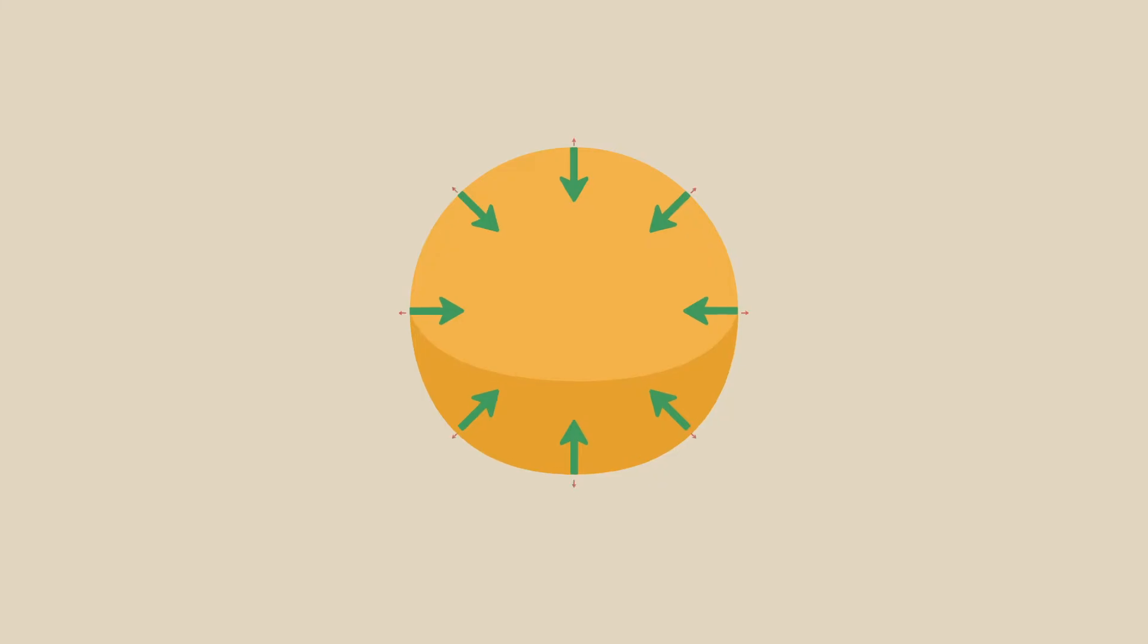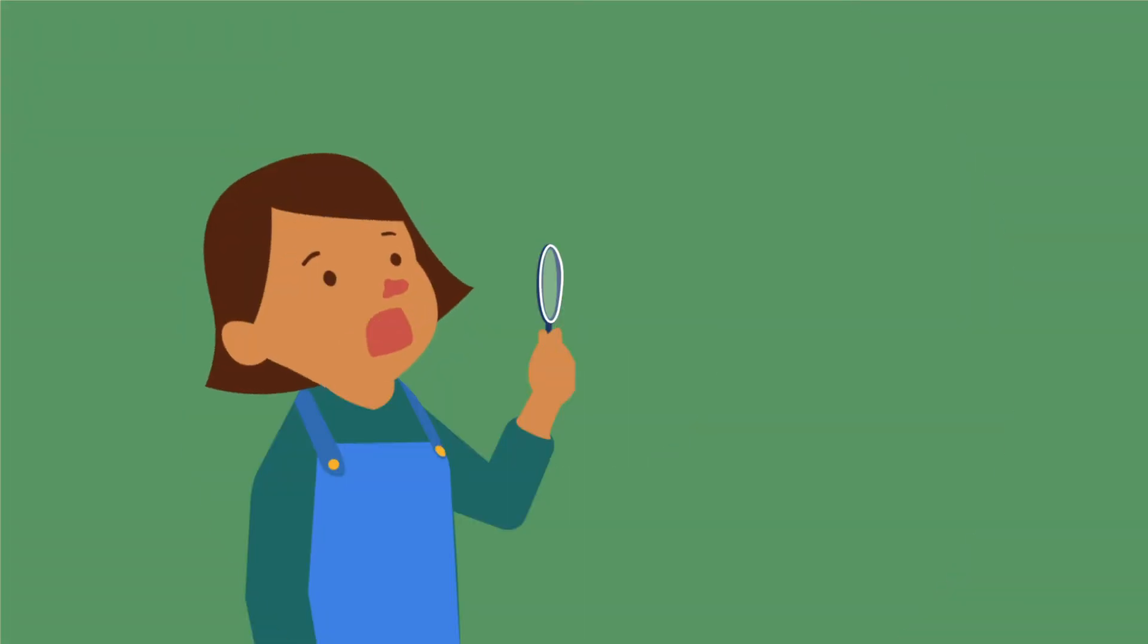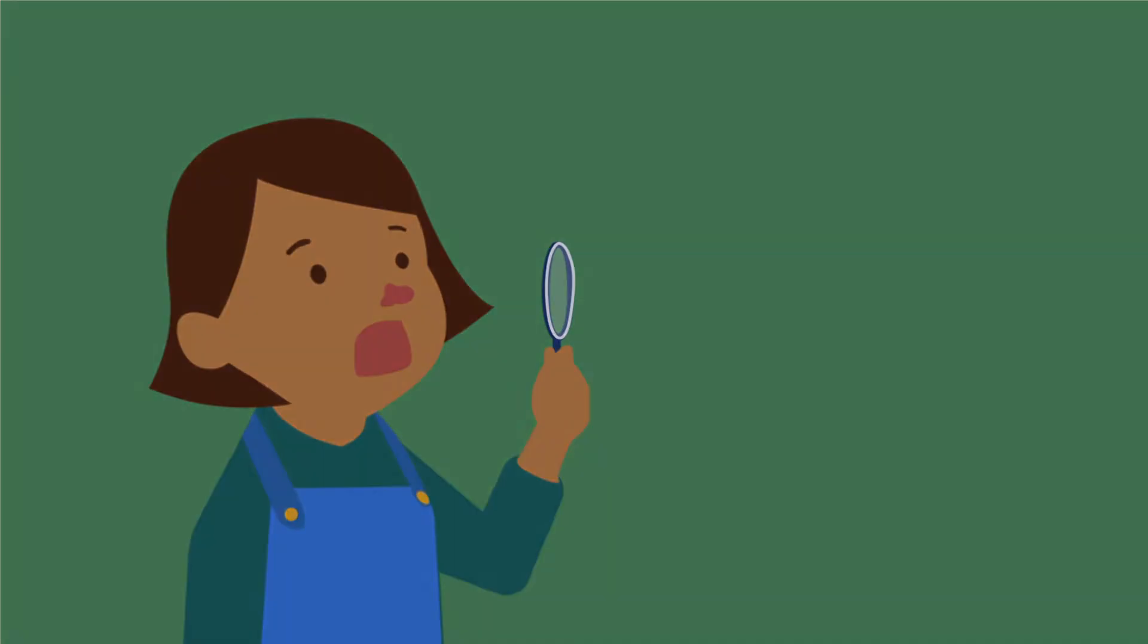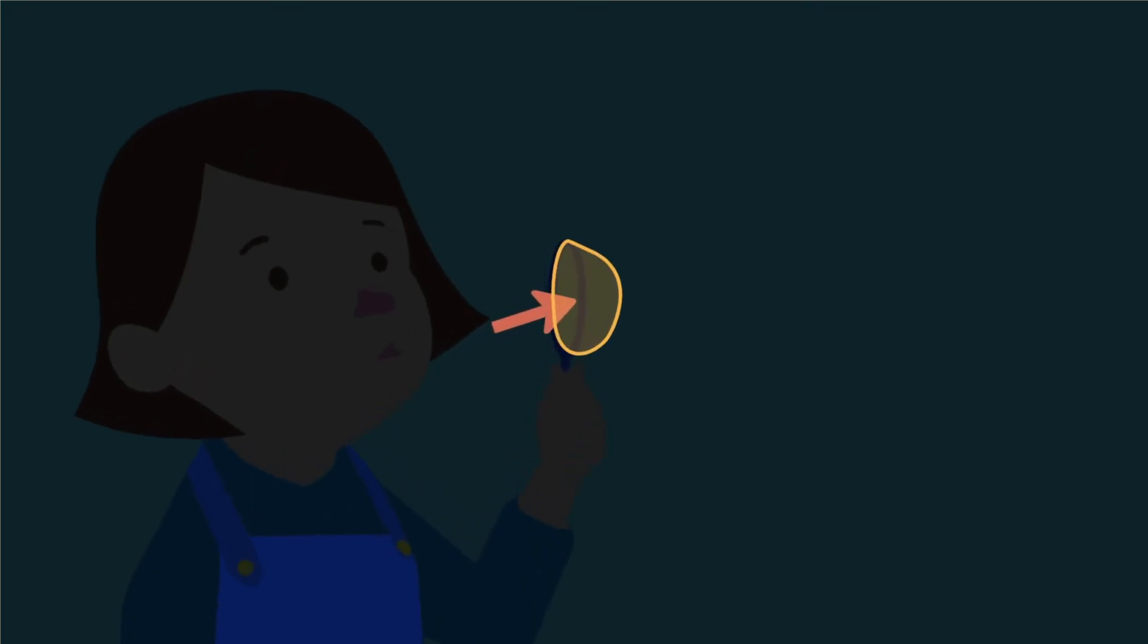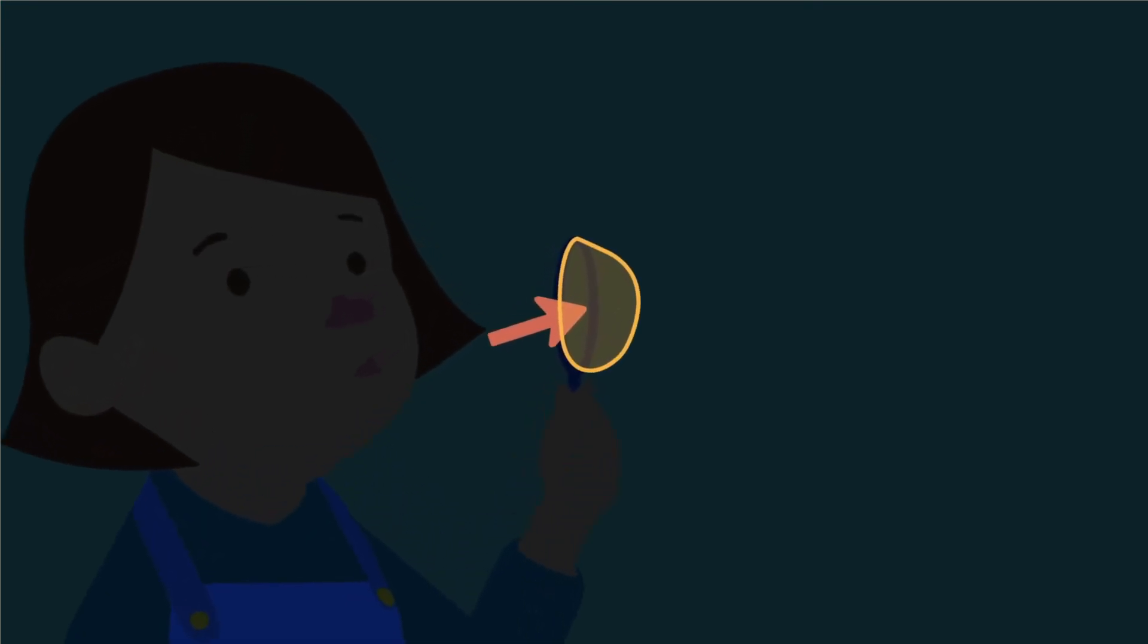Surface tension resists interfaces being stretched. For example, as a child, you probably blew soap bubbles out of a plastic ring. By doing this, you were exerting a force to stretch the liquid film spanning the ring. The surface tension was the force resisting this.